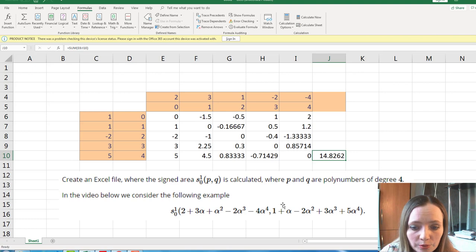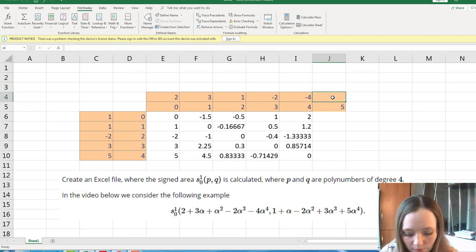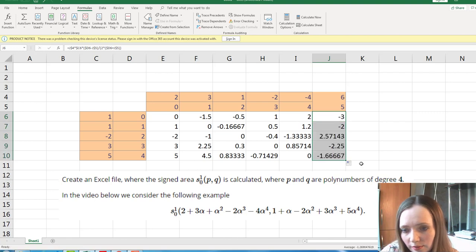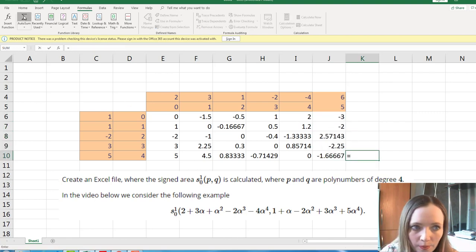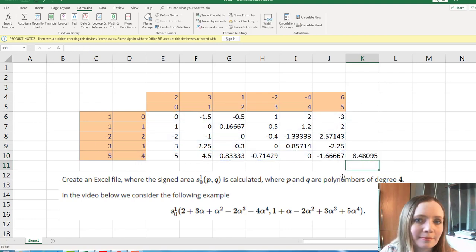Now if you want, for example, if you have polynomials of higher degree, how we can modify this file to higher degrees polynomials. Let me delete this one. For example, we have also fifth power and with some coefficients a six. We just repeat the same process. Very easy. And we sum up all these cells. That's it.